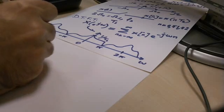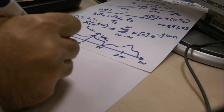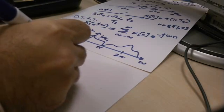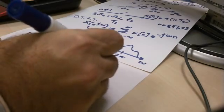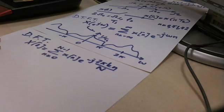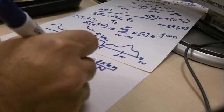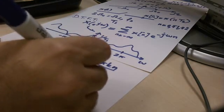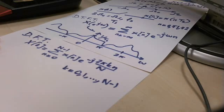DFT xk is defined as summation n from 0 to n minus 1, xn e to the minus j 2 pi k n divided by capital n. And we calculate xk. This is a discrete transform for k is equal to 0, 1 all the way up to n minus 1.